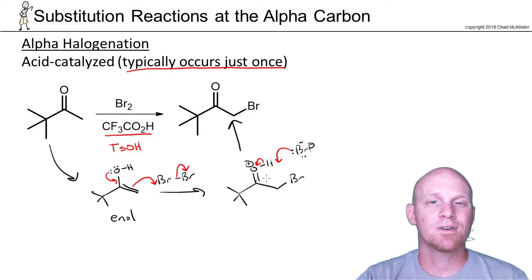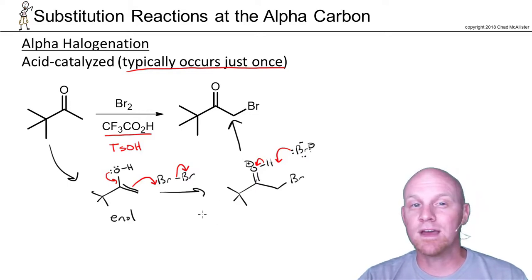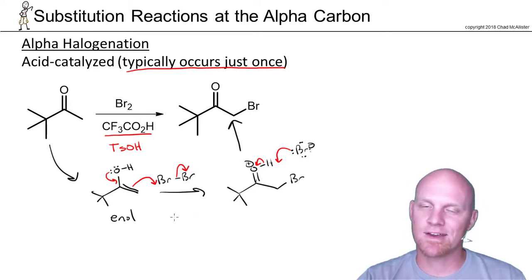And even though we've got a couple more alpha hydrogens left, it's probably not going to happen again. So the bromine here being a little electron-withdrawing is going to make forming the enol even a little less likely, and it was pretty unlikely to happen to begin with. And so generally they only occur once, maybe twice every once in a while, but generally we just say they occur once.